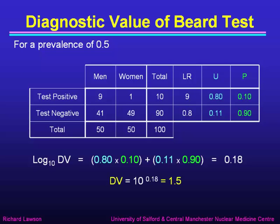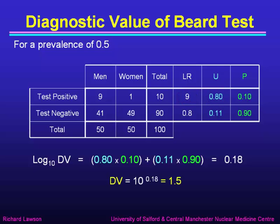Let's apply the diagnostic value to our beard test, which we've looked at before. The diagnostic value does depend to some extent on the prevalence of the disease, so let's take a typical prevalence of 0.5. We've already seen that the likelihood ratio for a positive result is 9 and for a negative result is 0.8. The usefulness of a positive result is the likelihood ratio minus 1 over the likelihood ratio plus 1, which is 8 over 10, equal to 0.8. We get this result in 10 out of 100 cases, so its probability is 0.1.